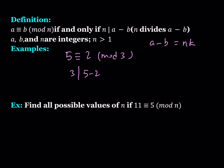We can write another statement which is also true. For example, 4 is congruent to negative 1 mod 5 — and we're going to be using negative numbers as well. This is true because 5 divides 4 minus negative 1. Here we have to be careful when subtracting a negative number.